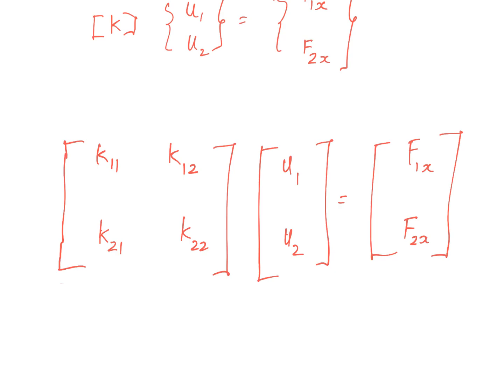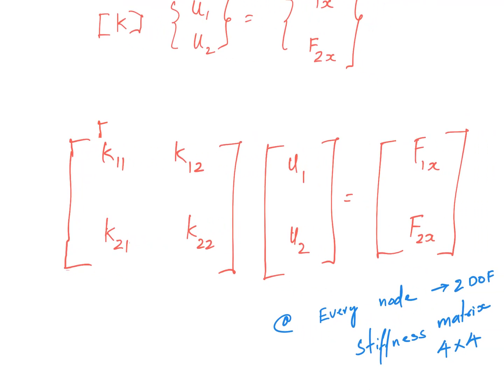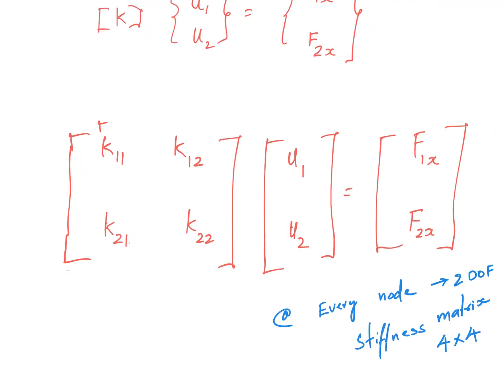So if at every node I was having two degrees of freedom then the dimension of the stiffness matrix would have been four by four. Why? Because instead of u1 corresponding to the first node itself we will be having two degrees of freedom. So this will be replaced by two by one vector, this will be again replaced by another two by one vector which will in turn gives us a four by four matrix here.